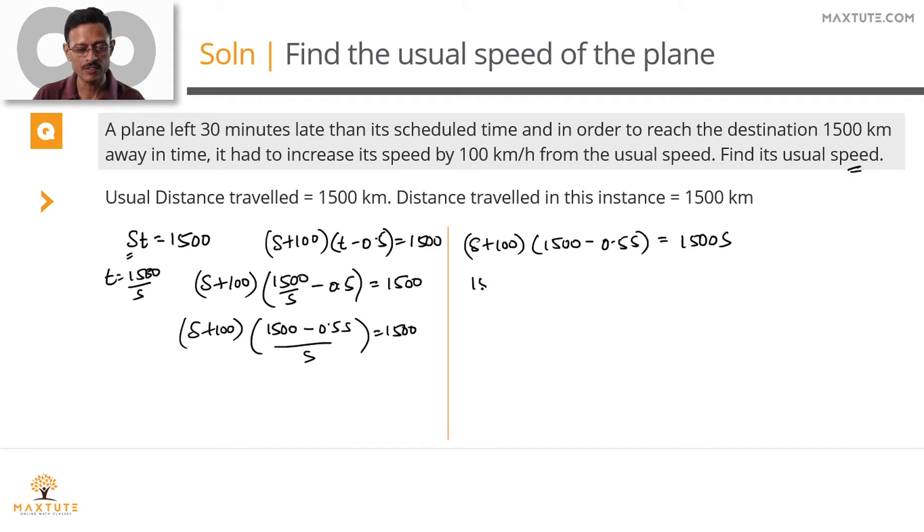Expand the term. s into 1500 will give us 1500 s. s into 0.5 s is going to be minus 0.5 s square. 100 into 1500 is going to be equal to 1500 s. It's a big number. 100 into minus 0.5 s is going to be equal to minus 50 s. This is equal to 1500 s. Cancel 1500 s on both sides.